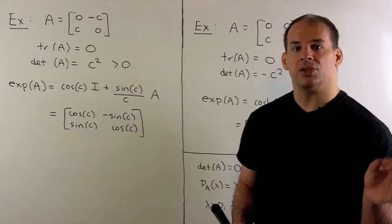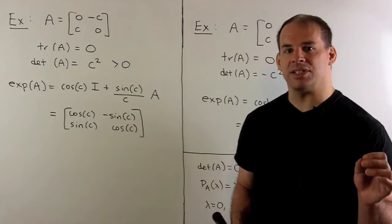Our final matrix is cosine of C minus sine C, sine C, cosine C.